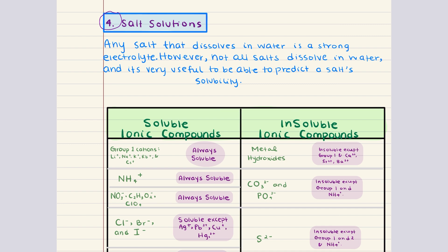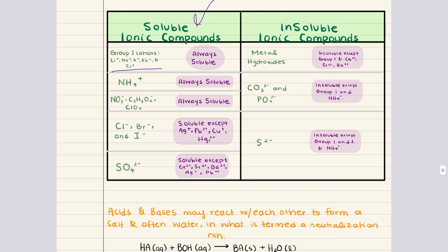Let's start with soluble ionic compounds. Group 1 cations like lithium, sodium, potassium, and cesium are always soluble. The ammonium ion always makes salts soluble in water. Compounds containing nitrate, acetate, and perchlorate are always soluble as well.